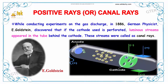Now let's talk about positive rays or canal rays. While conducting experiments on gas discharge in 1886, German physicist E. Goldstein discovered that if the cathode is used as a perforator, luminous streams appeared in the tube behind the cathode. These streams are called canal rays.